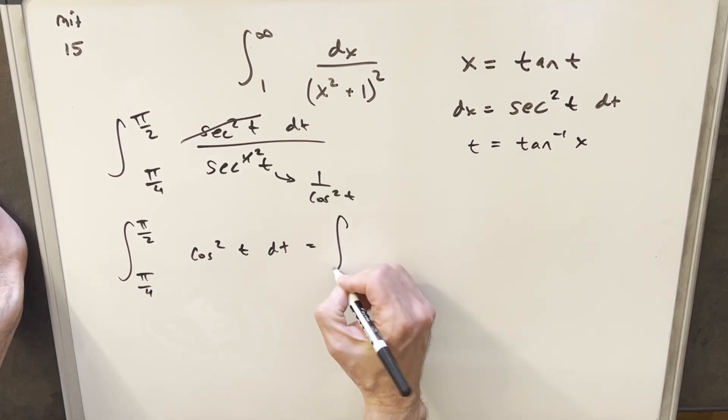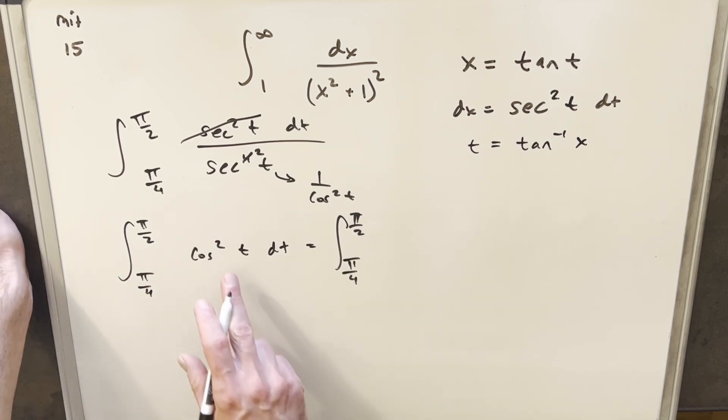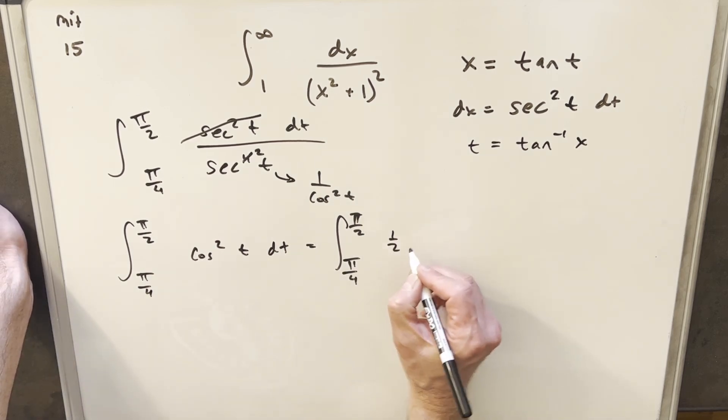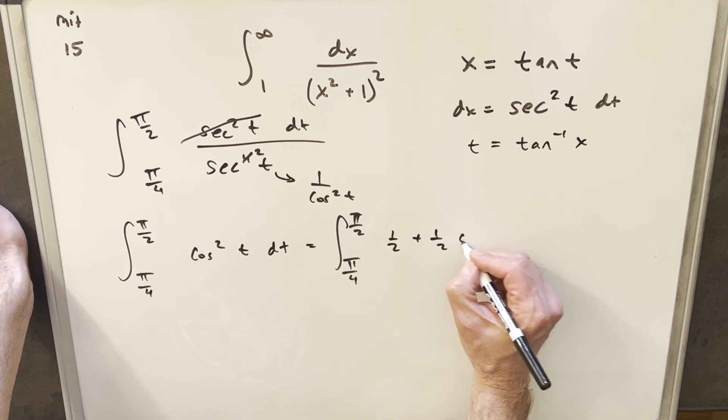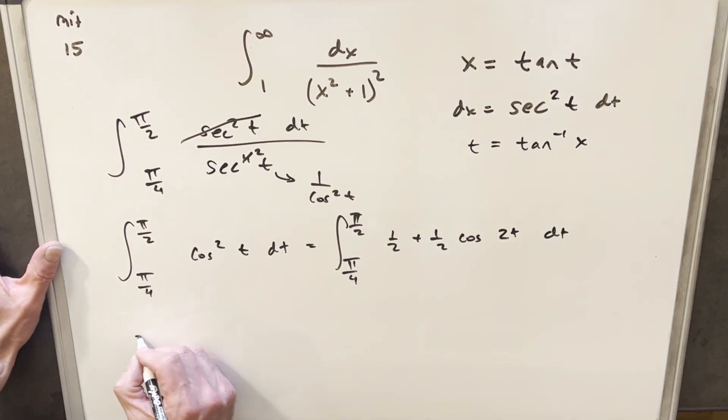Next I'm going to use another identity on cos²(t) to reduce the power. We have the formula that cos²(t) is the same as 1/2 + 1/2 cos(2t). And so now we'll just integrate this.